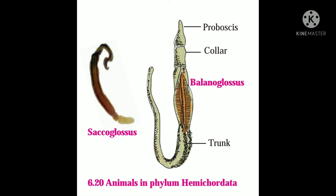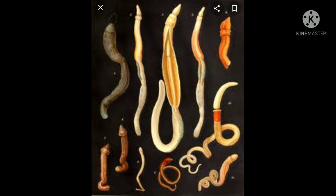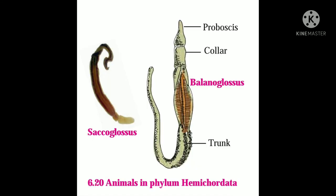Here is the proboscis, collar, and trunk. So, we have learned the examples of Phylum Hemichordata. Hemichordata is also called acorn worm. The notochord is present in the proboscis, so they are called Hemichordata. These are marine animals that live in burrows in sand.